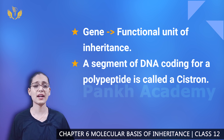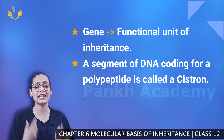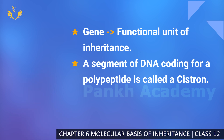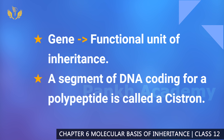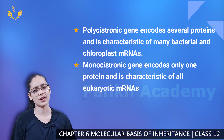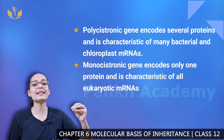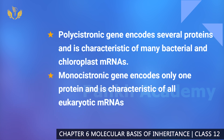What is a gene? A gene is the functional unit of inheritance. A segment of DNA coding for a polypeptide is called a cistron. Now, a structural gene can be in two ways: polycistronic or monocistronic. Polycistronic means many cistrons are present; monocistronic means a single cistron is present. Polycistronic genes are found in prokaryotes and monocistronic genes are found in eukaryotes.